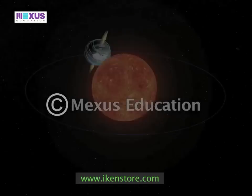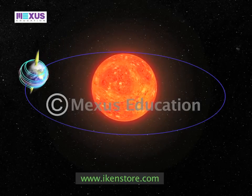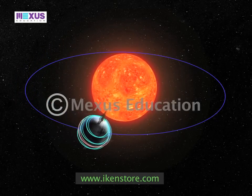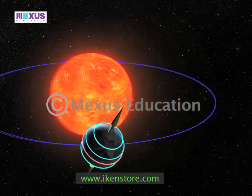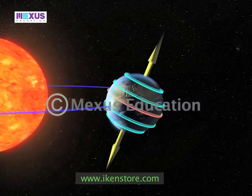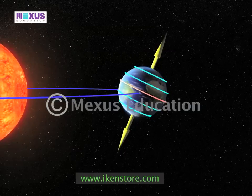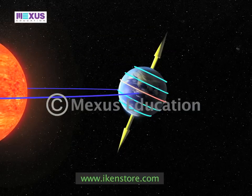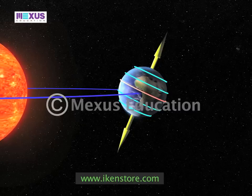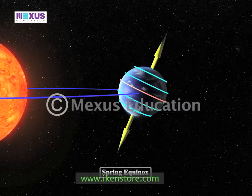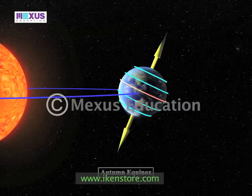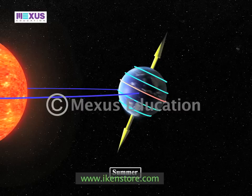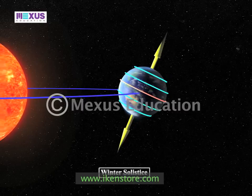Having inspected the significance of earth's tilt, let us examine how the spinning of the earth on its axis effects and changes the seasons we frequently enjoy — namely the spring equinox, the autumn equinox, and the summer and winter solstice.